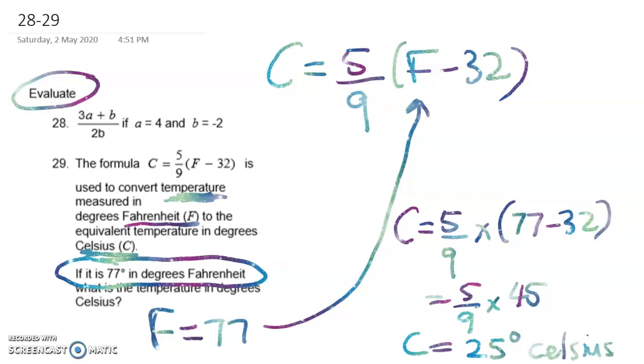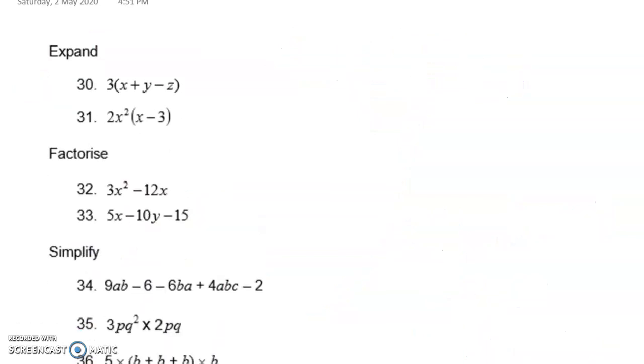On to questions 30 to 36. Here we've got some expanding and some factorising. I've done separate videos on these skills, so I'm going to go reasonably quickly through these ones. Here we have to multiply the 3 by each term in the brackets. So we get 3x + 3y - 3z. We do the same thing in this one. We multiply each term in here by the 2x². And we get 2x³ - 6x².